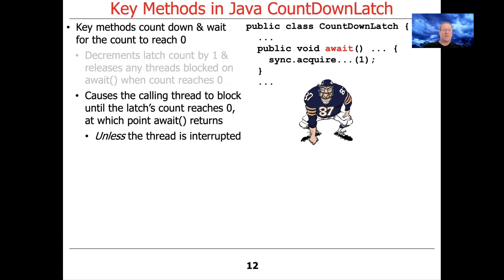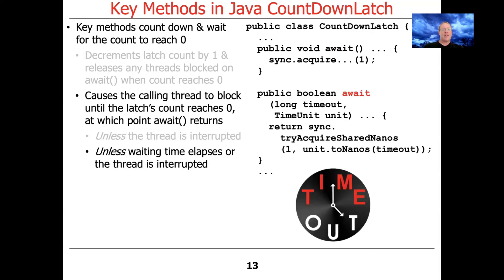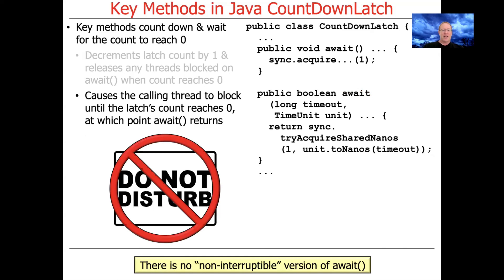There are two Await methods. The non-timed version causes the calling thread to block until the count reaches zero or until the thread is interrupted — so this is an interruptible operation. The timed version will wait until the count reaches zero, the thread is interrupted, or the timeout elapses, and you can determine what happened based on the return value.